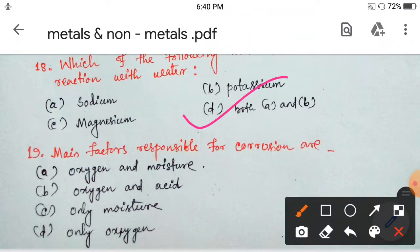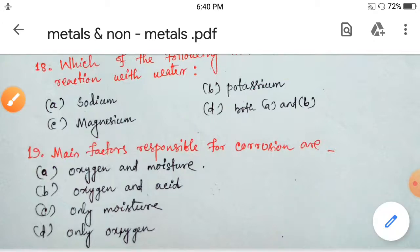Next. Main factors responsible for corrosion are oxygen and moisture, oxygen and acid, only moisture, only oxygen. The factors responsible for corrosion, option A, that is oxygen and moisture, both are responsible for corrosion. Okay, thank you.